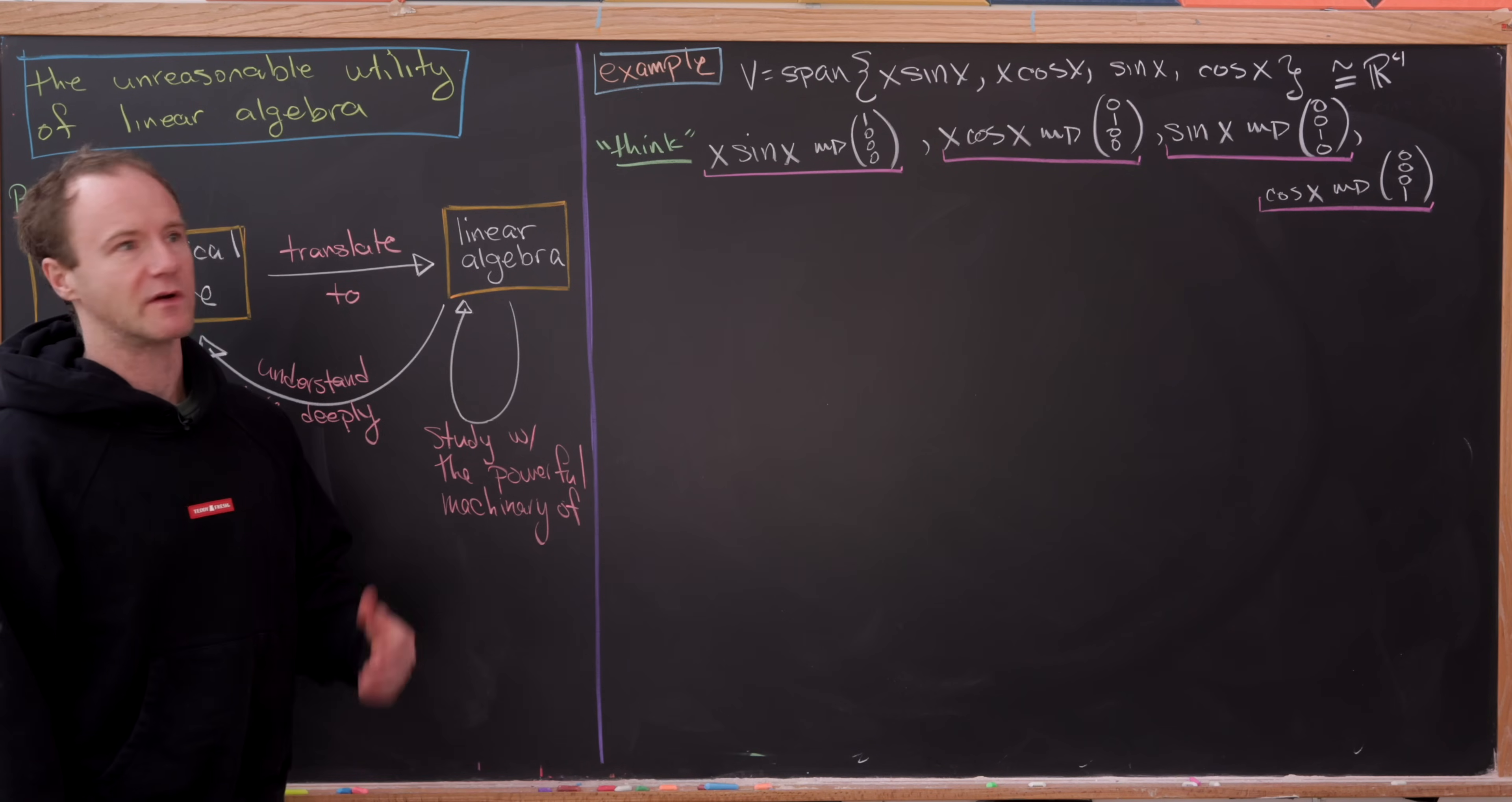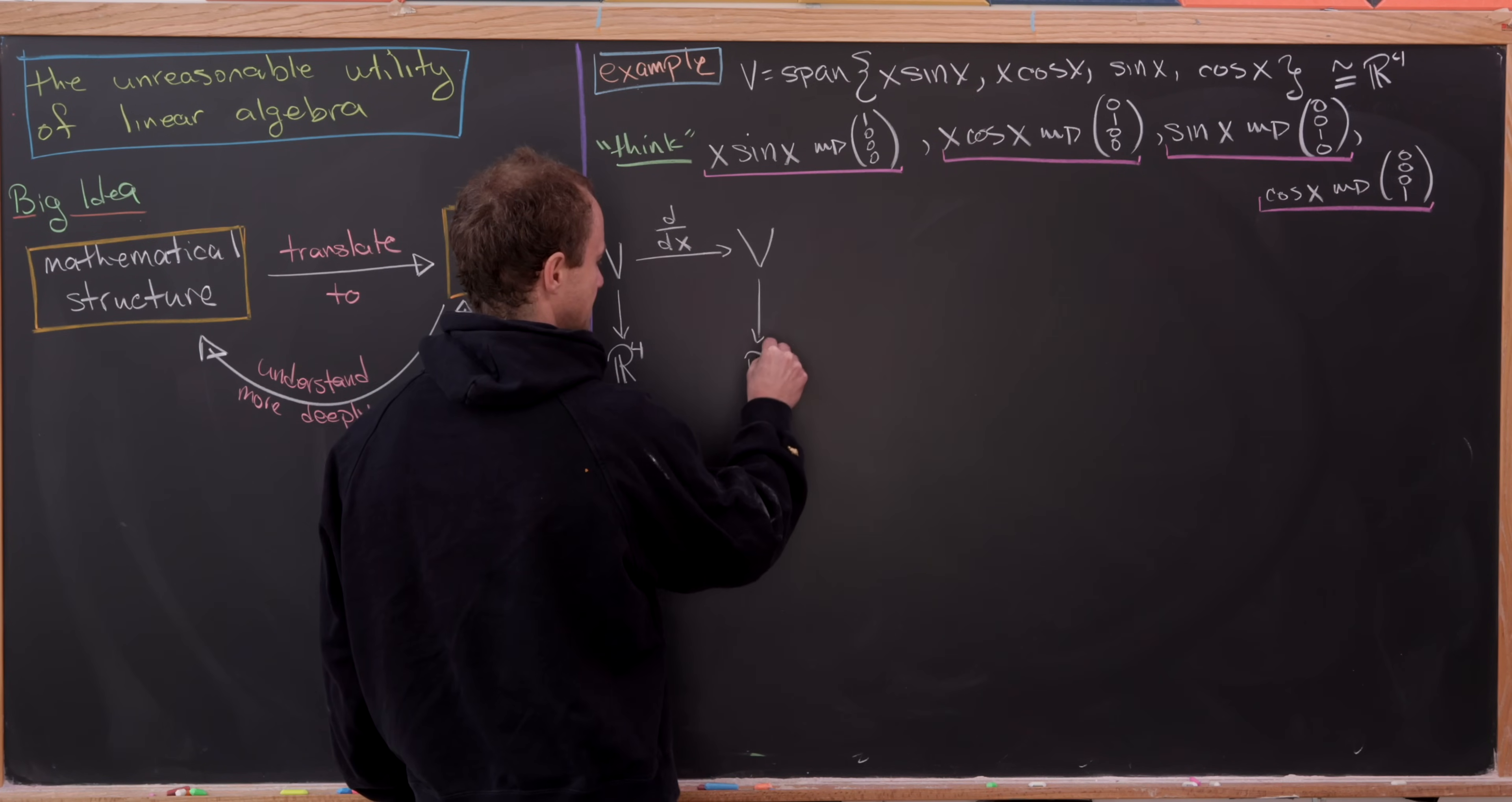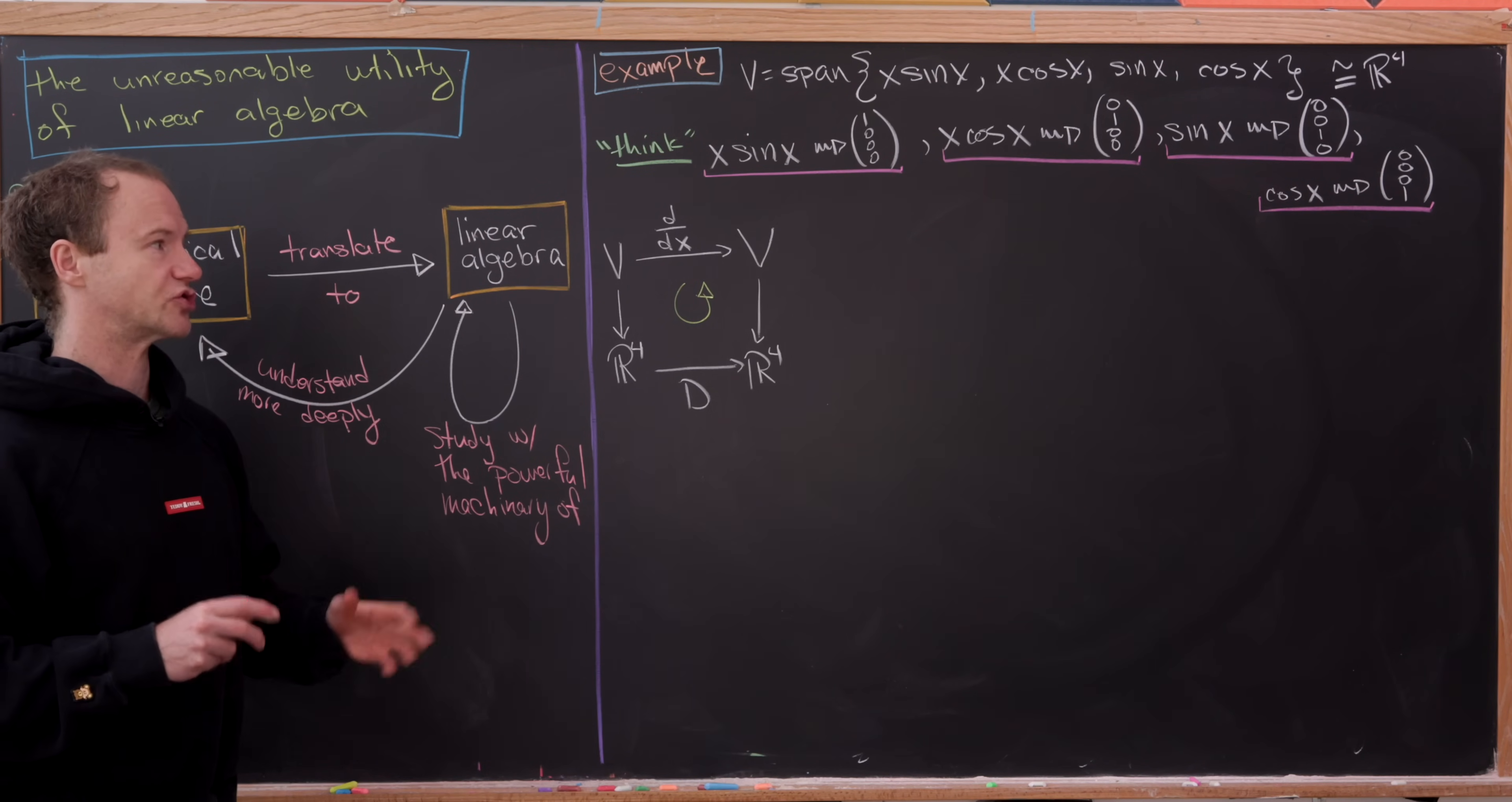And what we want to do here - there are a number of things we could do - but let's just see what the derivative does to our space V. And if we can turn that into a more familiar linear algebraic setup, which might involve a matrix. So let's maybe make a diagram first. We've got this map from V to V, which is given by simply taking the derivative. And then we've got this assignment of V to R4 going down each of the sides. And then over here, we've got something that I'll call capital D, which we'll see will be a 4x4 matrix.